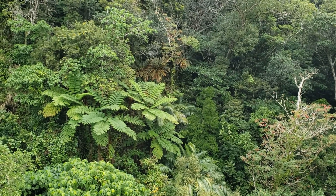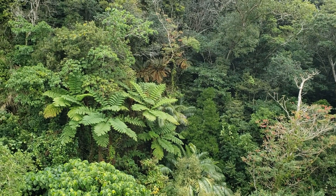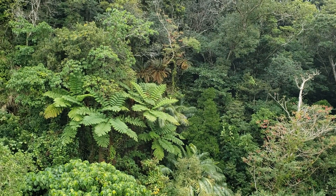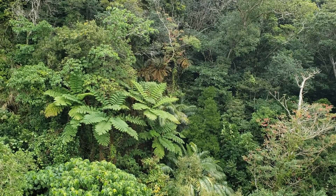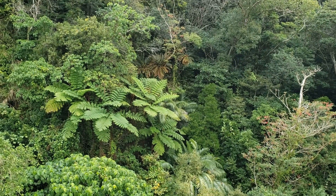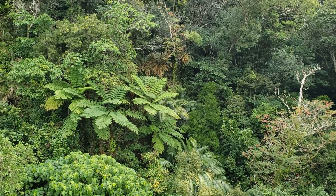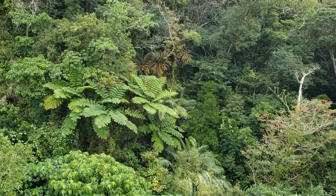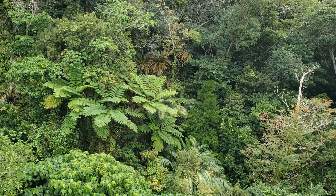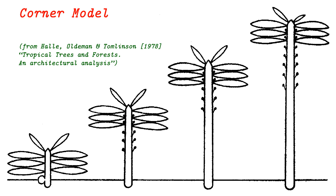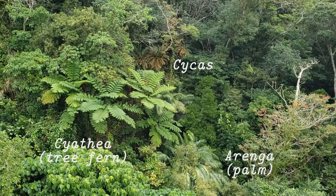There is a very nice slope before me which has three corner trees. Corner trees is a model of growth which has a big trunk and giant leaves — the trunk is not branched but the leaves are very much branching, as you can see.